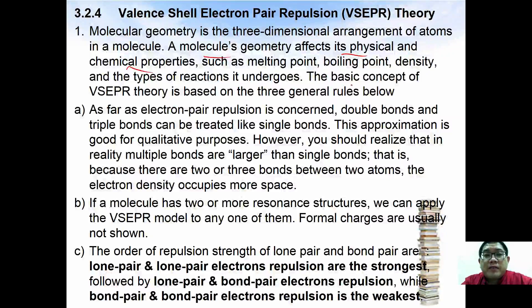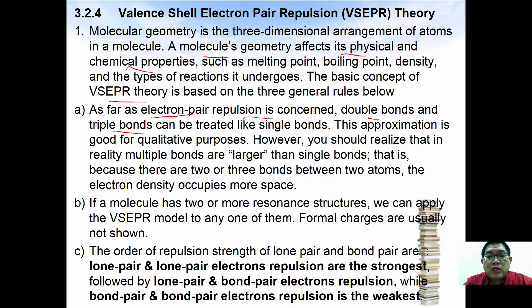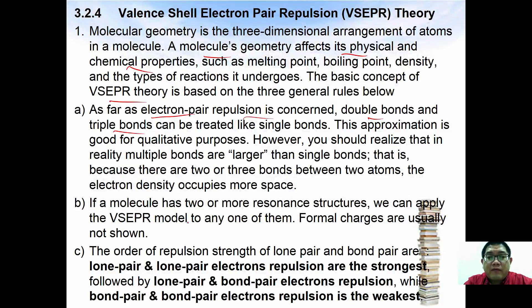The basic fundamental concepts of VSEPR theory are based on three general rules. Number one: as electron pairs repulse each other, double bonds and triple bonds can be treated like a single bond — in other words, only sigma bonds are considered. If a molecule has two or more resonance structures, we can apply VSEPR theory to any one of them. Formal charges are usually not shown.